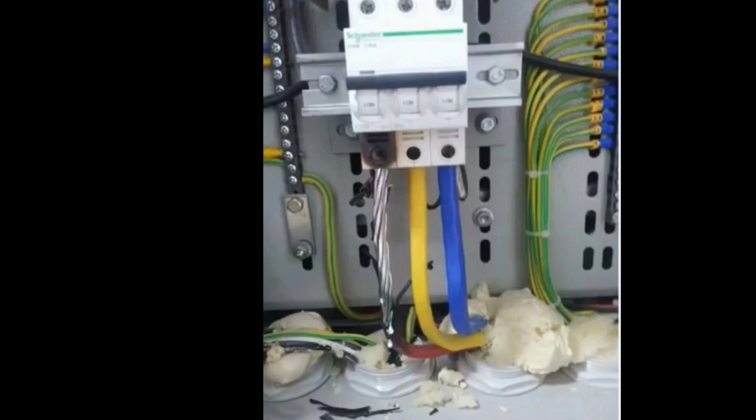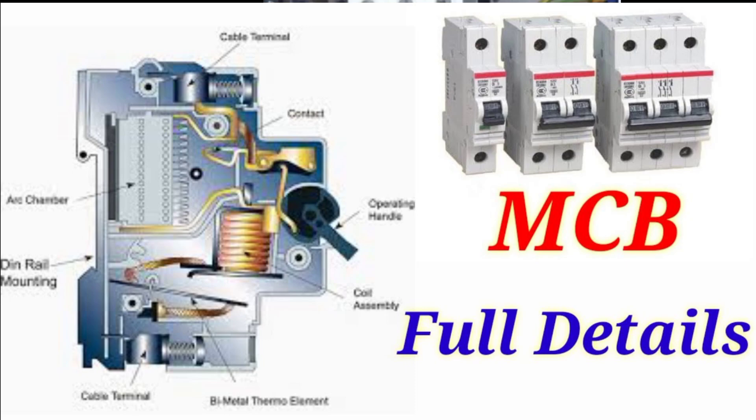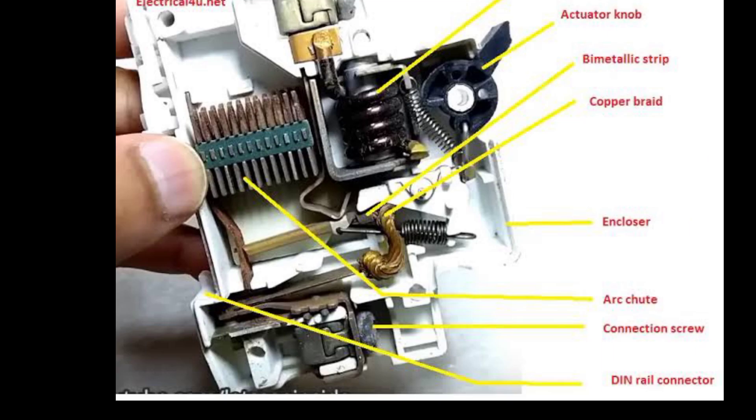How did you select an MCB? So this is the MCB — this is the top portion, this is the connection portion, and this is the incoming side. This is the first point where you connect the cable, so the cable is tight.